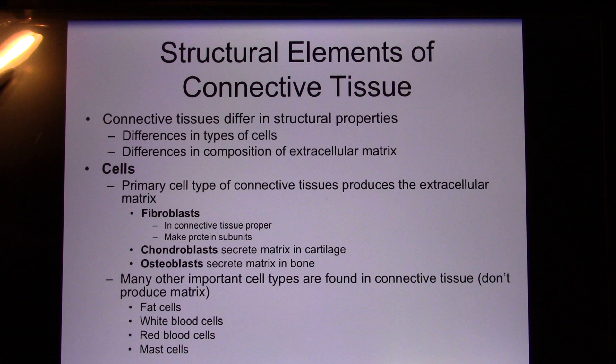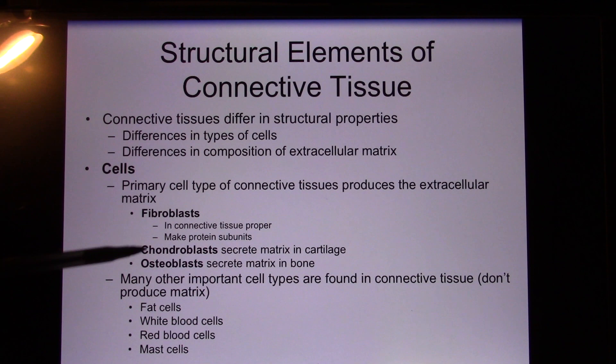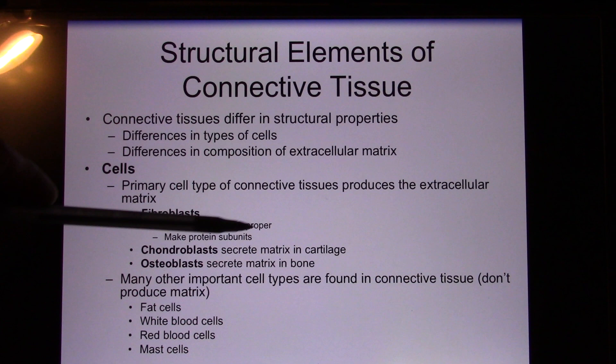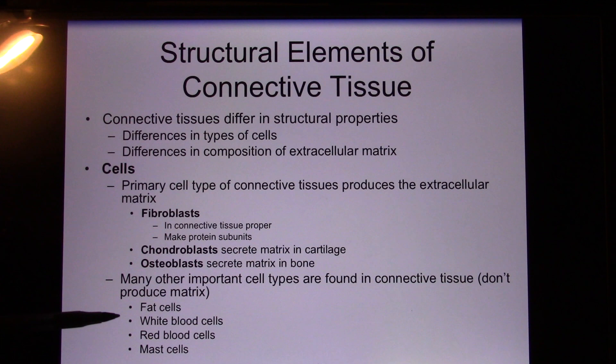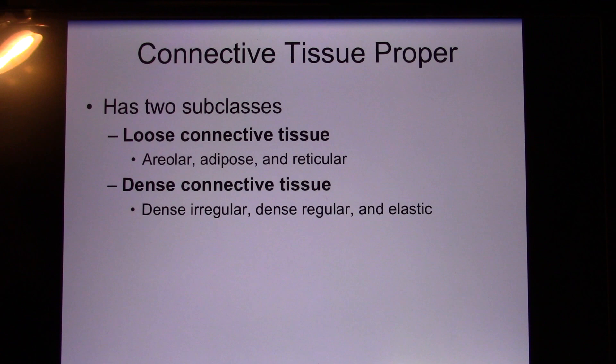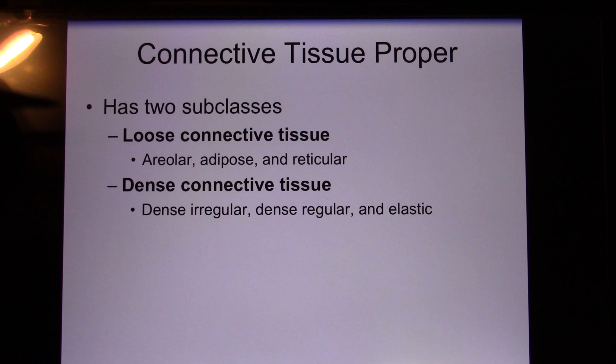So connective tissues have different kinds of cells. We're going to talk about the fibroblast, the chondroblast (that's cartilage), and osteoblast (that's bone). The fibroblast is the one in the connective tissue proper. You also have others: fat, blood cells, and mast cells. Connective tissue proper is a big category. You have loose and dense connective tissue. The loose ones are areolar, adipose, and reticular. The dense ones are dense irregular, dense regular, and elastic.